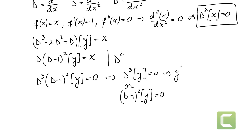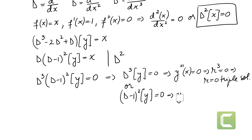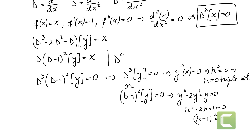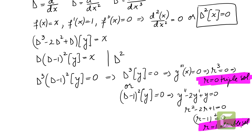D cubed applied to y means the third derivative equals zero, giving the characteristic equation r cubed equals zero, so r equals 0 with multiplicity 3. For (D minus 1) squared applied to y equals zero, the characteristic equation is r squared minus 2r plus 1 equals zero, or (r minus 1) squared equals zero, giving r equals 1 as a double solution.